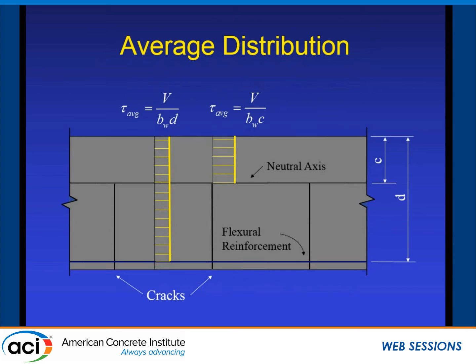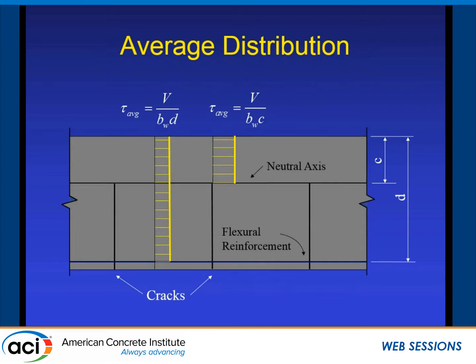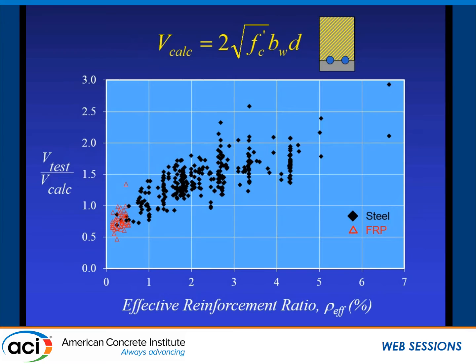Let me talk about stress. The average stress we've been using in the code is based upon V over BWD, because we were looking at a section between two flexural cracks. Originally it wasn't BD — it was JBD. What we're looking at now is the tip of the crack above it, because at a crack section we only have BWC to work with. So now let's look at that as an average stress.